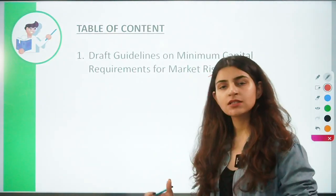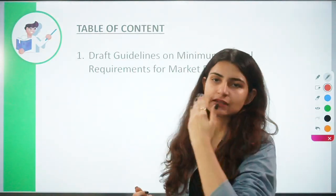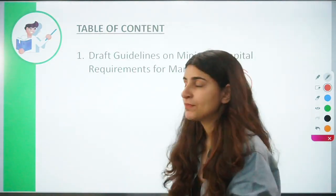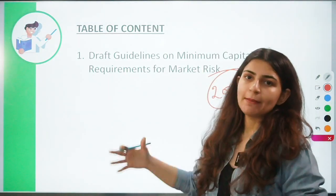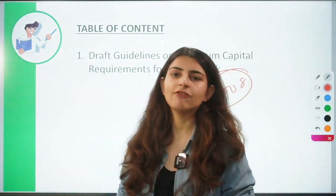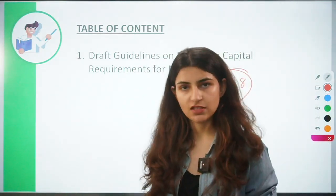If the banking system collapsed — that is why the Basel norms came — because if a banking system collapses, it will have a ripple effect on the economy and on other sectors as well.